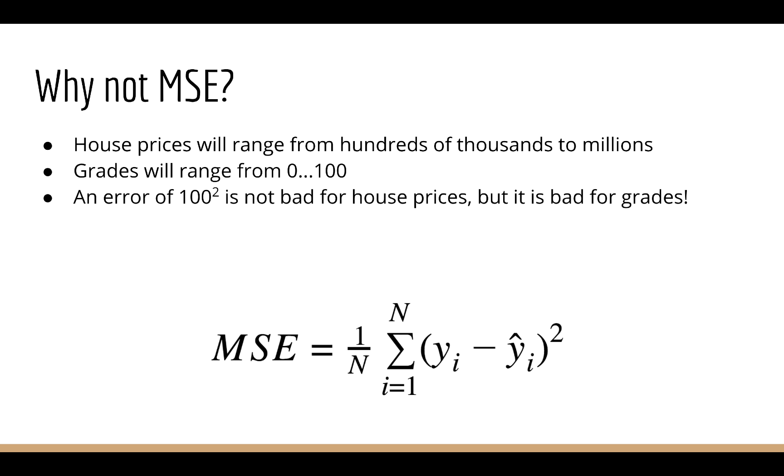So in this case, magnitude matters. As discussed earlier, you don't really care if a house costs one million dollars, and you guess one million dollars plus 100. But if you're predicting grades, then the difference of 100 in the prediction is huge, as that's as large as the entire range of possible values. What we care about is the relative difference between the squared error and the possible range of values.